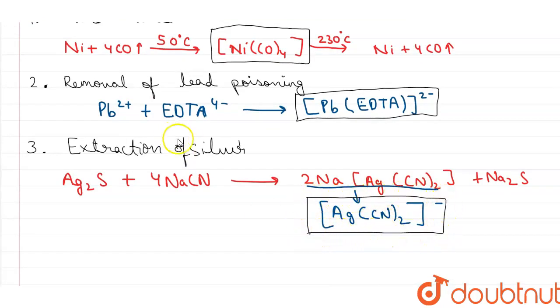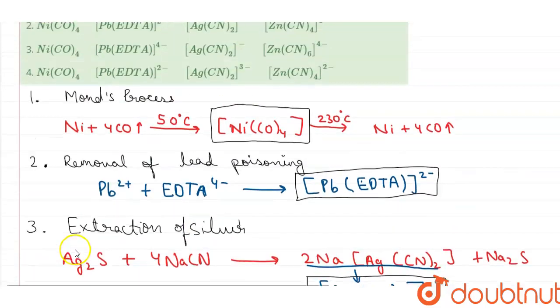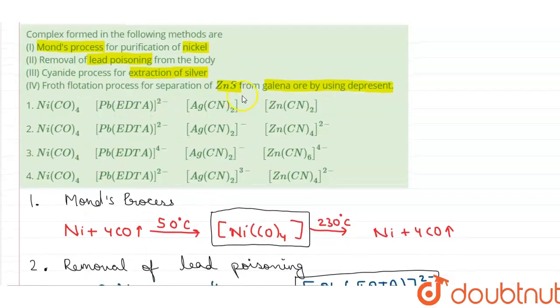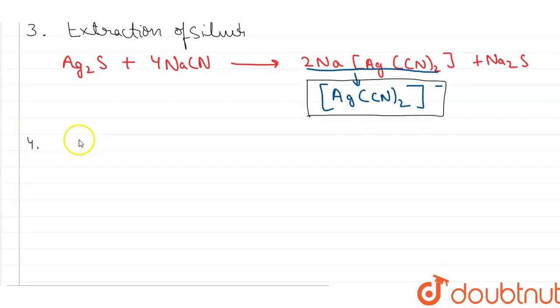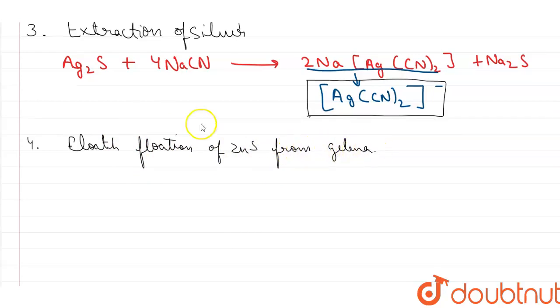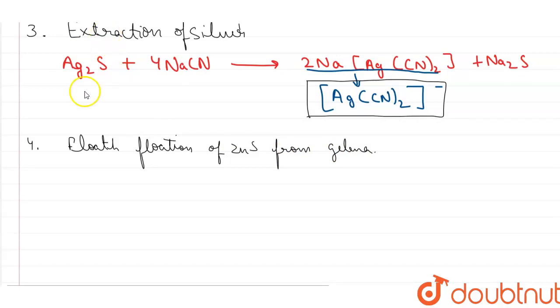Moving on to the fourth reaction, that is froth flotation process for separation of ZnS from galena. So the reaction involved over here is ZnS reacts with cyanide ion, gives us